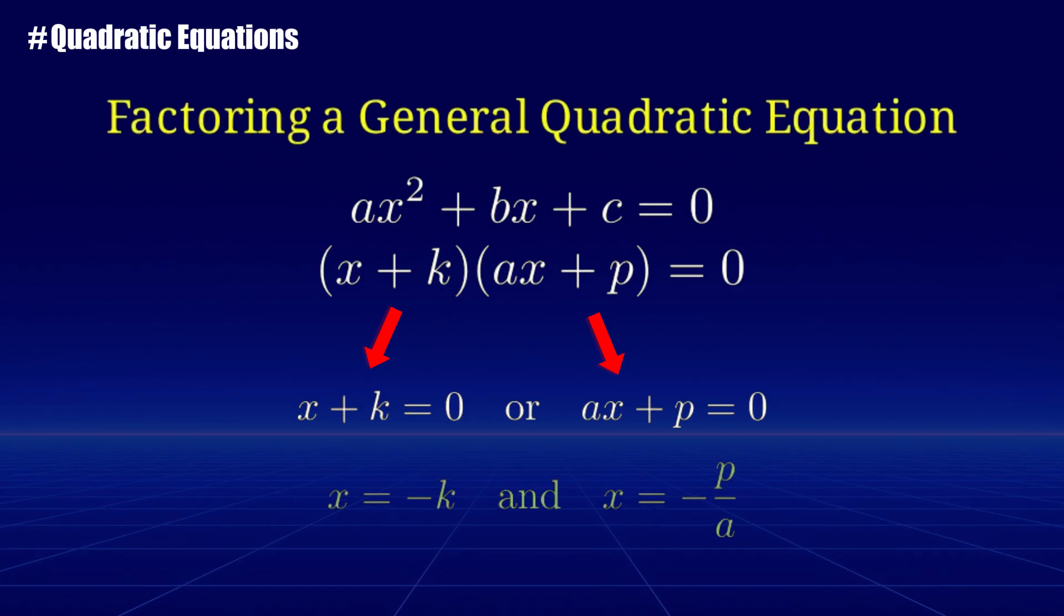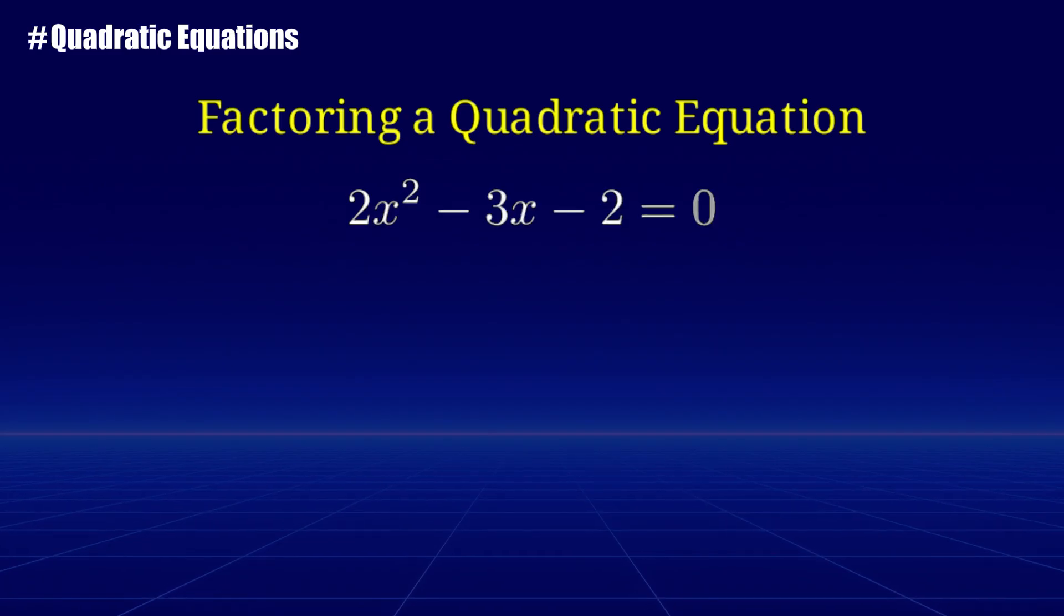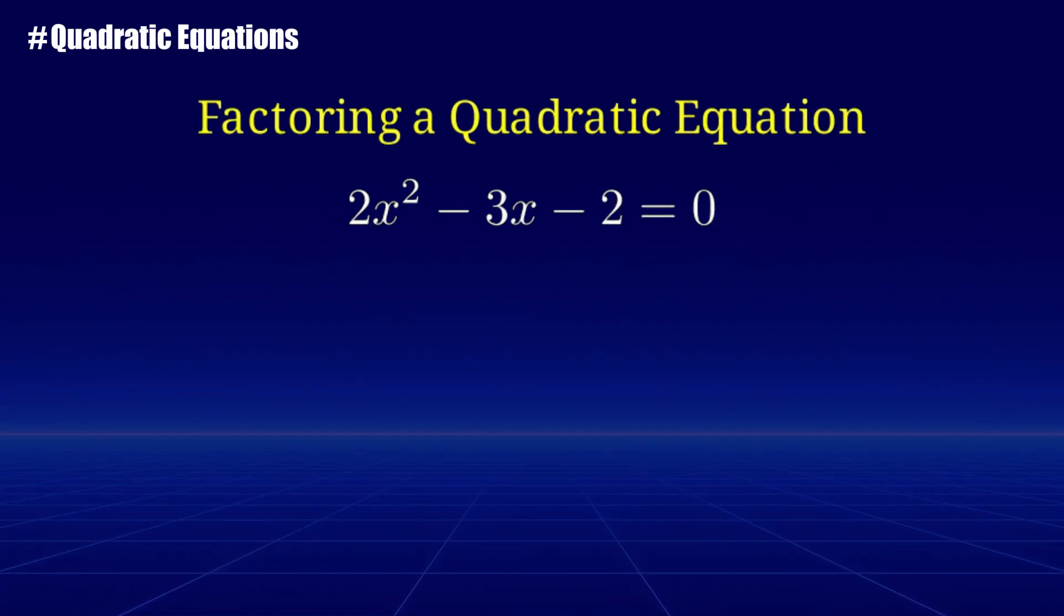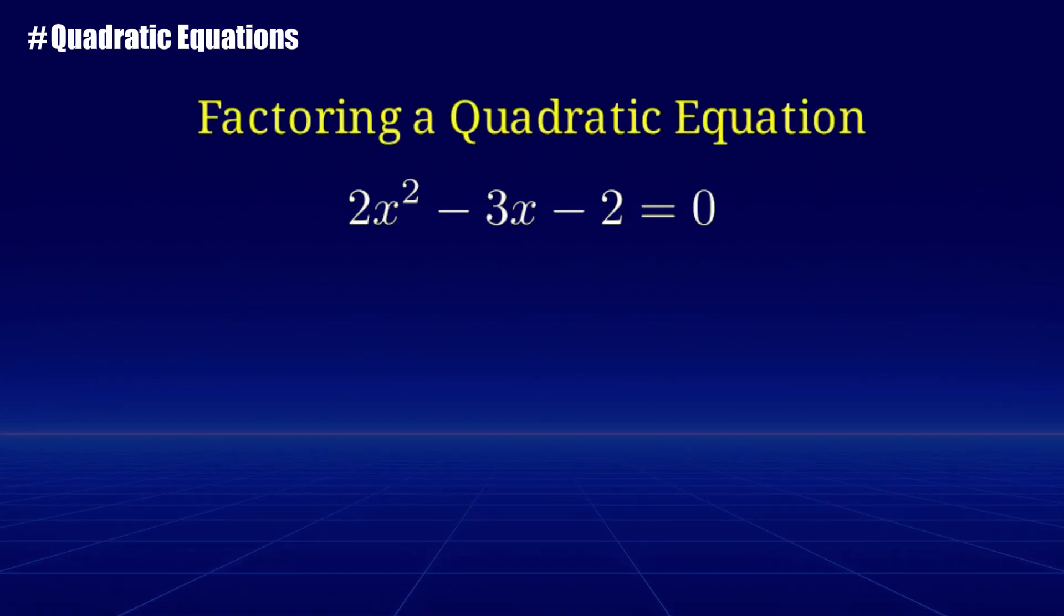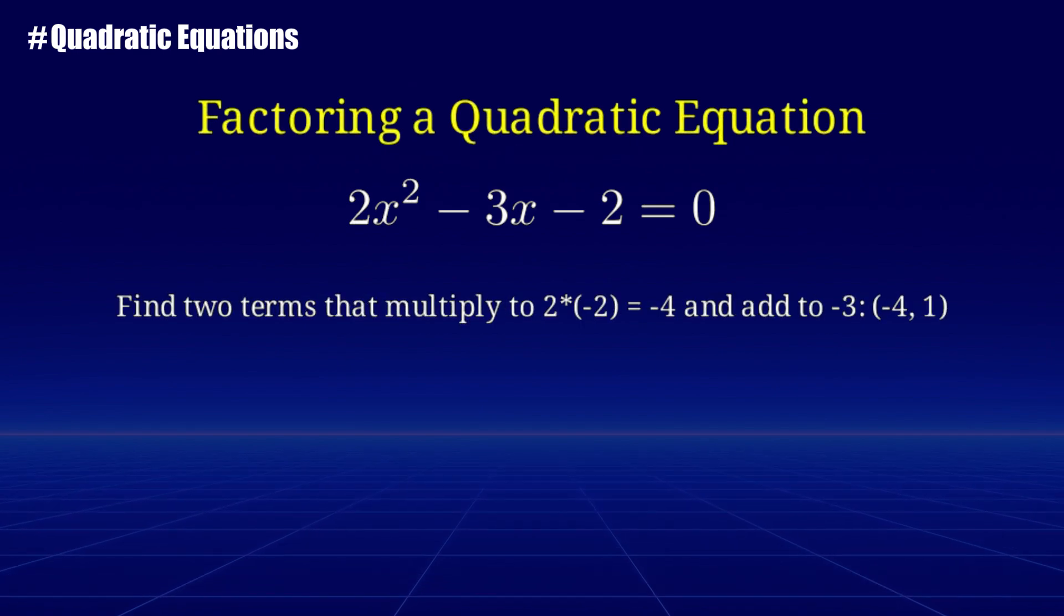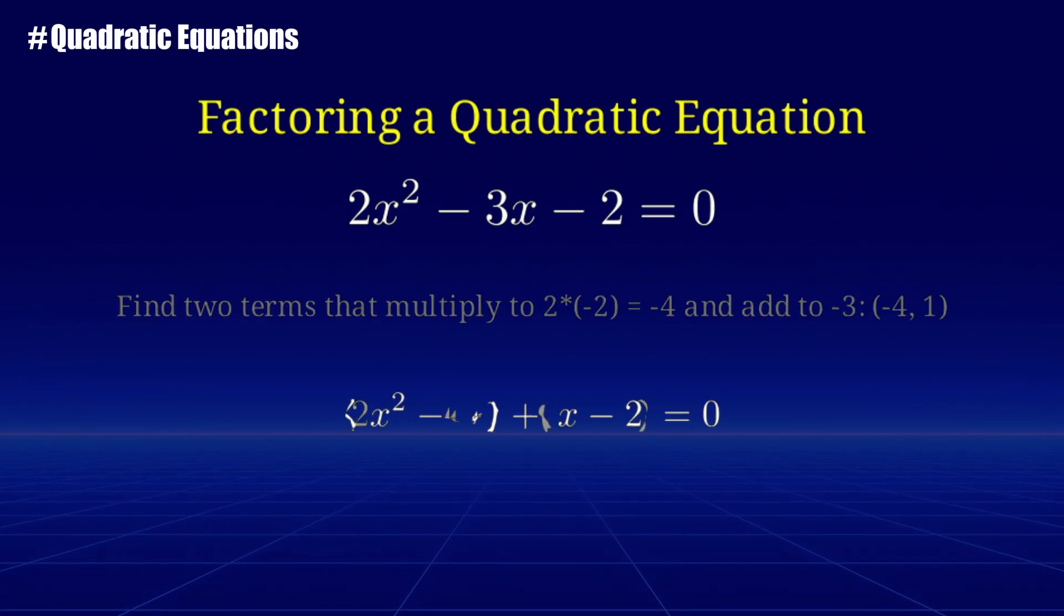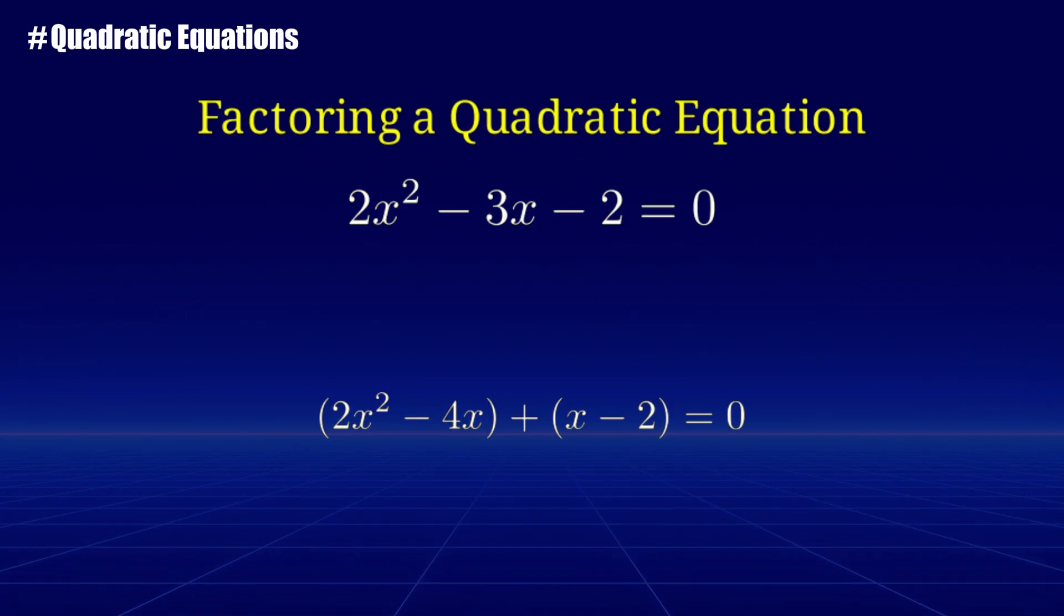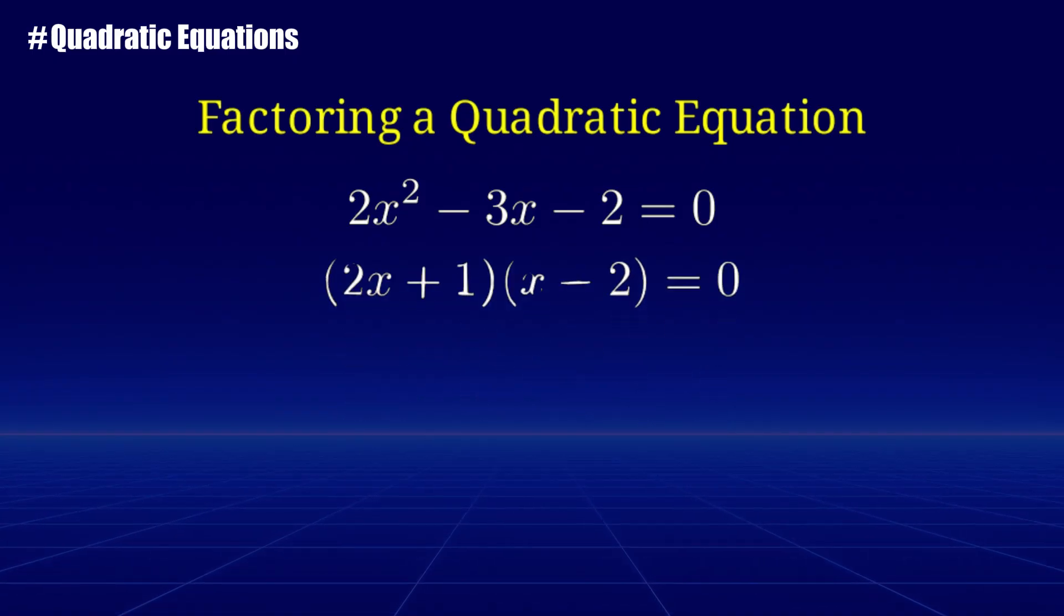Let's look at an example. To solve 2x squared minus 3x minus 2 equals 0, we first write the equation in the form ax squared plus bx plus c, which it already is. Then, we find two numbers that multiply to the product of a and c and add up to b. Then, we rewrite the middle term using these two numbers. We group the factors and solve for the two x values.